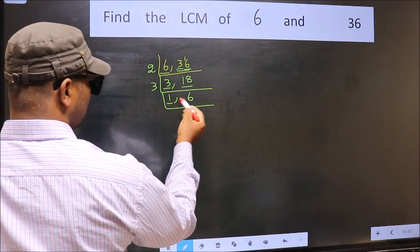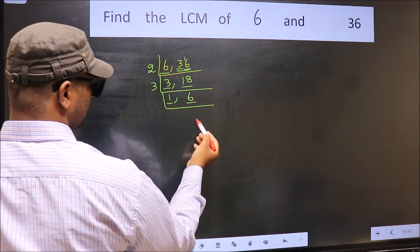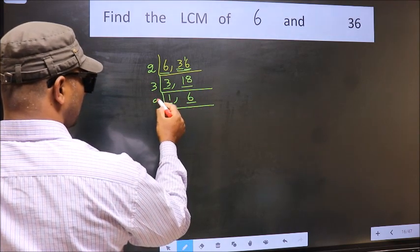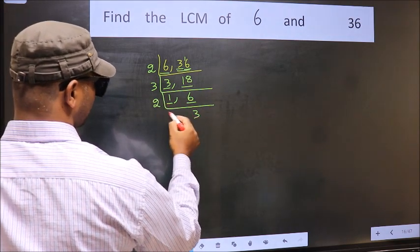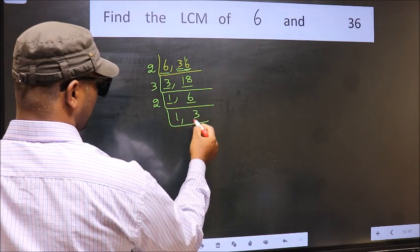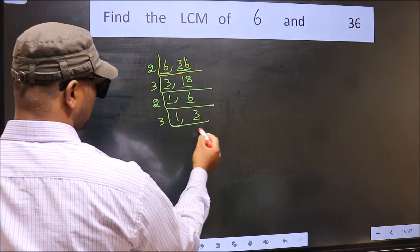Now we got 1 here. So focus on the other number 6. 6 is 2, 3 is 6. Now we have 3, 3 is a prime number. So 3, 1 is 3.